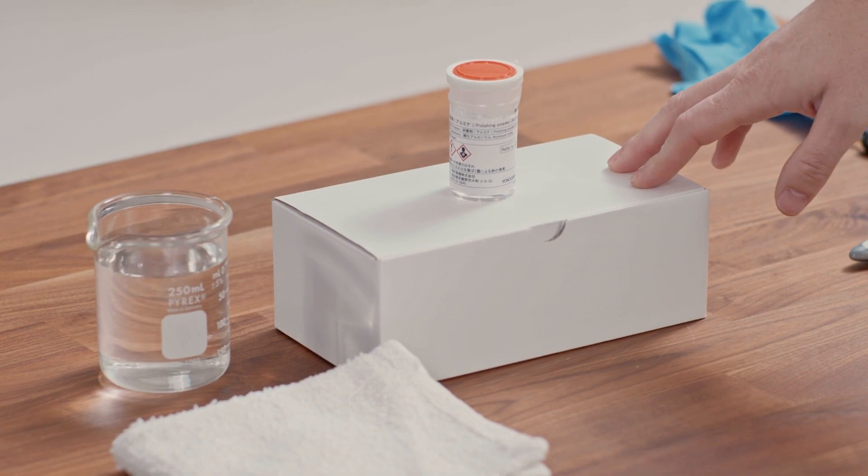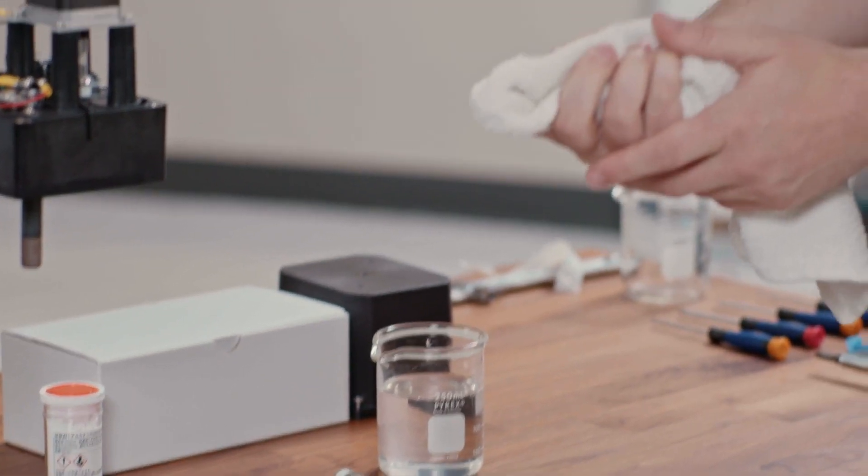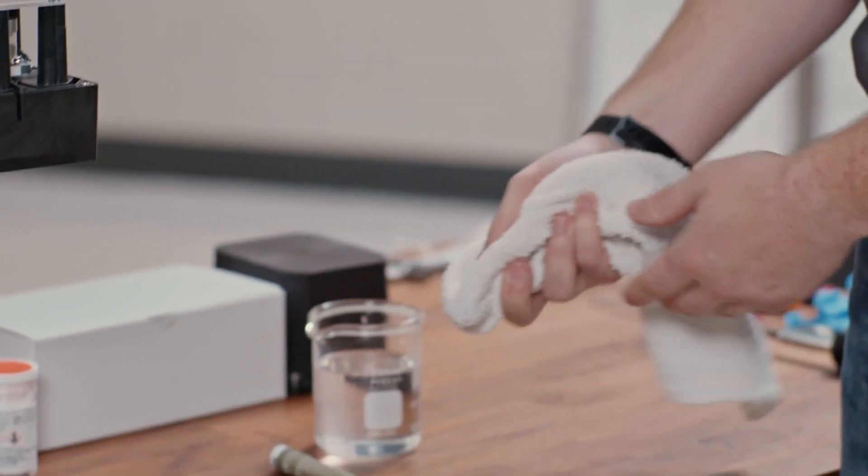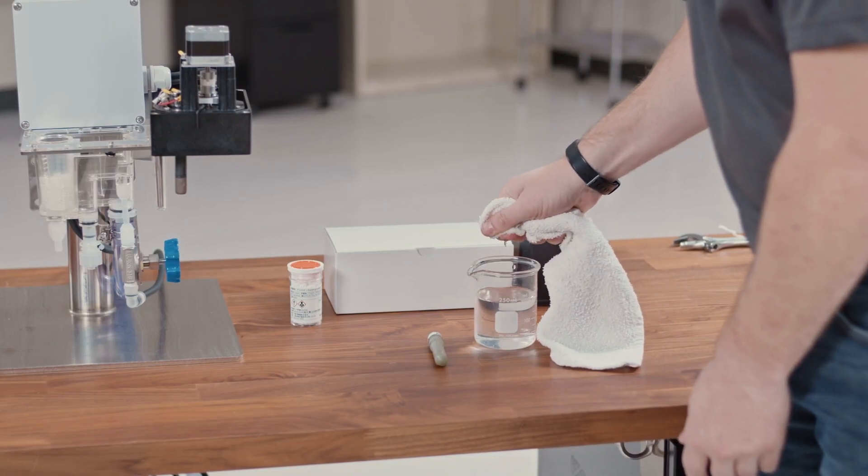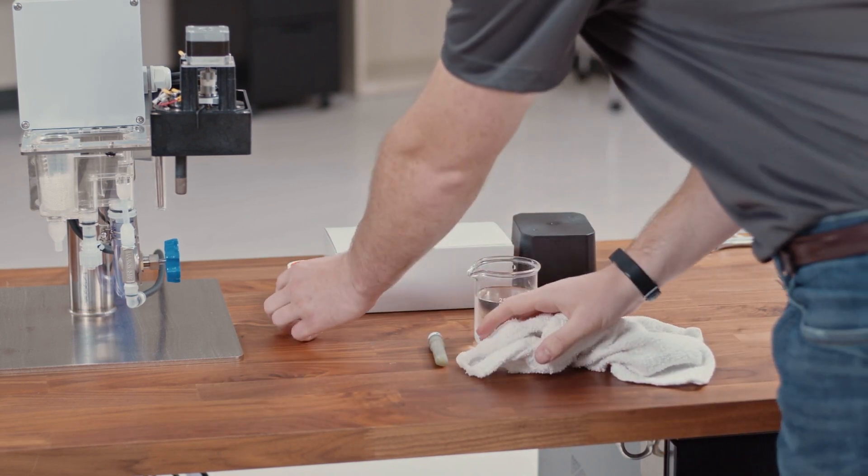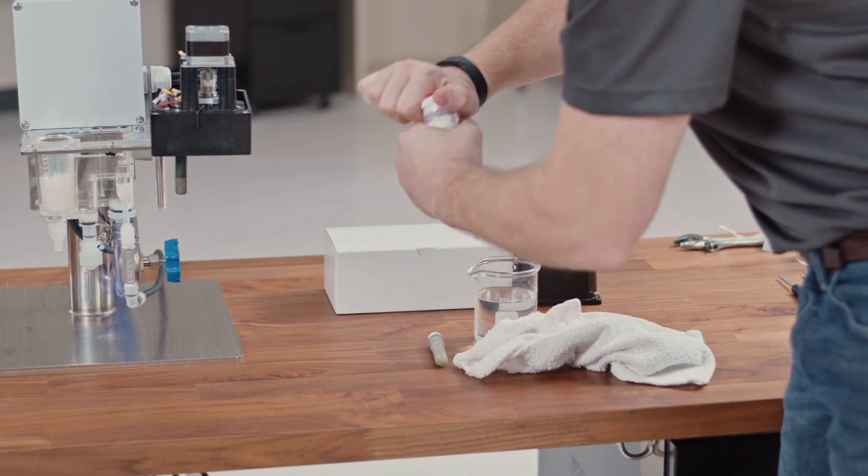You want to start by wetting a small portion of your clean cloth. You can just put it over your index finger and dip it into water. You don't need much water, just enough to provide some lubrication for the alumina oxide that is the abrasive in this case.